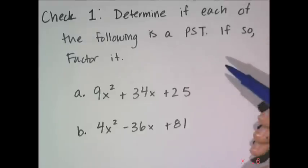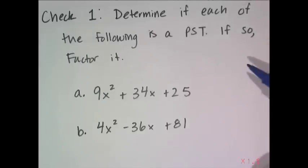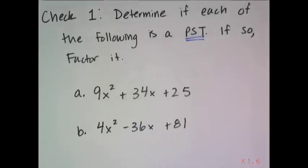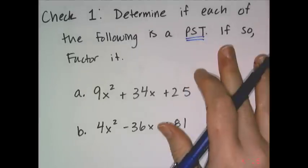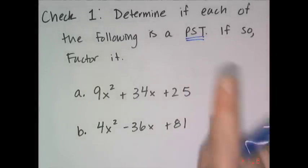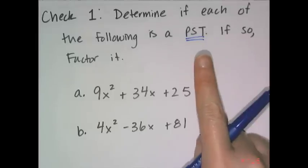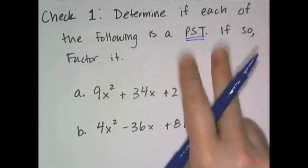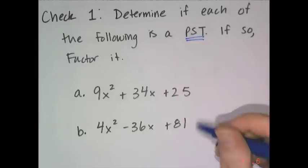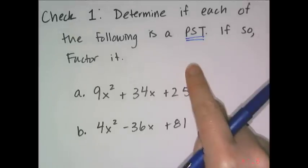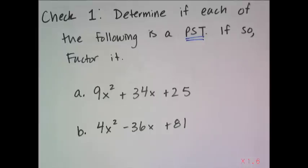Before moving on to the final special case, let's do a quick check on perfect square trinomials. I've given you two quadratic trinomials. Determine if they are indeed perfect square trinomials, and if so, factor them. If not, just say it's not a perfect square trinomial.